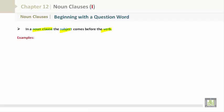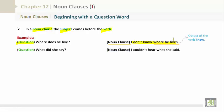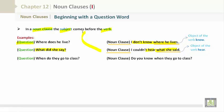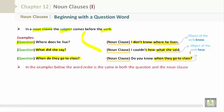Let's take a look at some examples. Question: 'Where does he live?' — Noun clause: 'I don't know where he lives.' Question: 'What did he say?' — Noun clause: 'I couldn't hear what she said' — the noun clause 'what she said' is the object of the verb 'hear.' Please note the subject comes before the verb. Question: 'When do they go to class?' — Noun clause: 'Do you know when they go to class?' — this is the object of the verb 'know.'